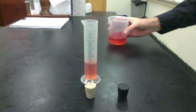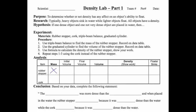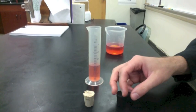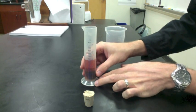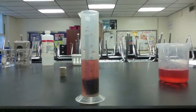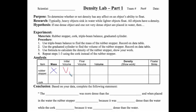Now it's time to take our first volume. Get eye level and be as accurate as you can be. The first volume goes under the column for first volume on your data table. Carefully slide the object in so the water level rises — don't splash any water out of the graduated cylinder. Now we take our second volume. Put this volume on your data table. To find the volume of the object, we take the second volume and subtract the first volume.